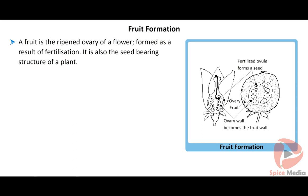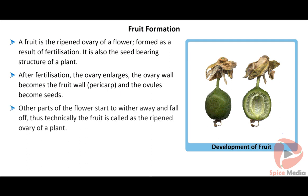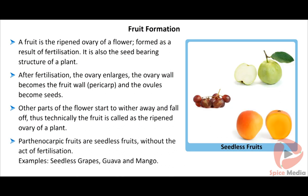A fruit is also the seed-bearing structure of a plant. After fertilization, the ovary enlarges; the ovary wall becomes the fruit wall or pericarp, and the ovules become seeds. Other parts of the flower start to wither away and fall off. Technically, the fruit is called the ripened ovary of a plant.